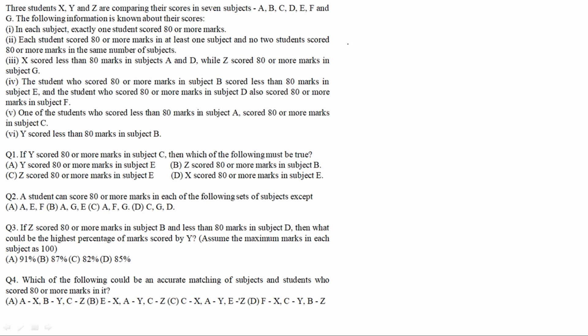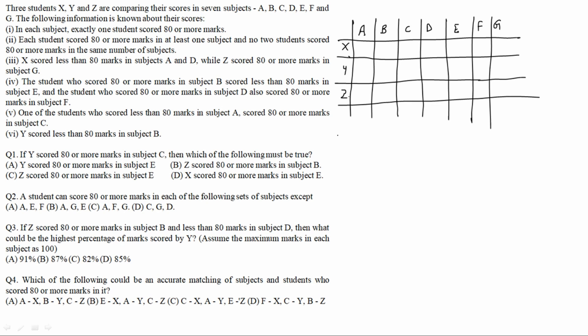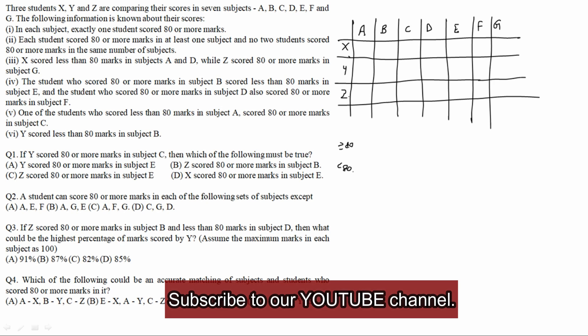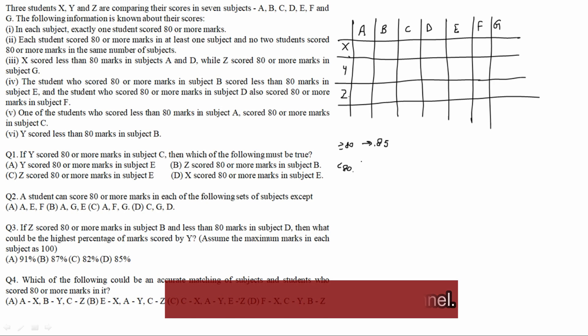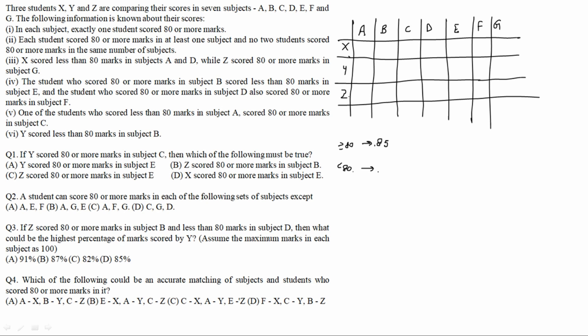There are three students: X, Y, and Z. When checking all six points regarding the marks, there are only two conditions: marks are either 80 or more, or less than 80. For simplicity, 80-or-more will be represented as 85, and less-than-80 will be represented as 75. So whenever I mention 80 or more I will write 85, and for less than 80 I will write 75.